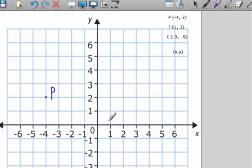Point T is 1, 3. We'd move over 1 and then up 1, 2, 3. That's point T.